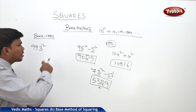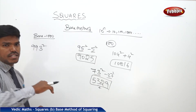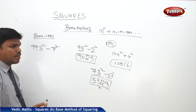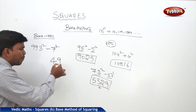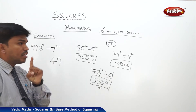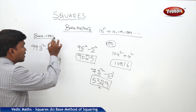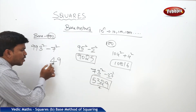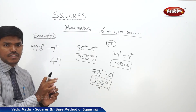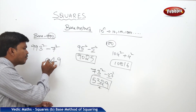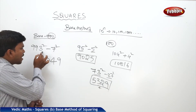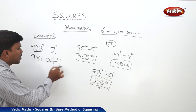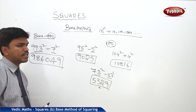Is 993 more than or less than the base? It is less — so put minus, and how much less? 7. What is 7 square? 49. But the right side part of the answer should consist of 3 digits because there are 3 zeros in base 1000. So write 049, not just 49. Now 993 minus 7 is 986. So the answer is 986049.